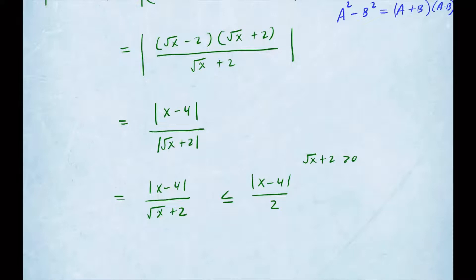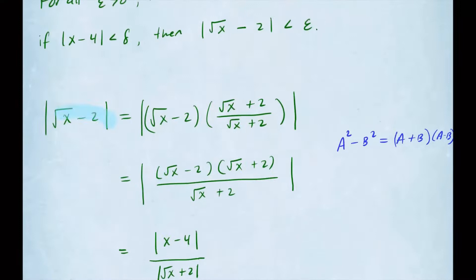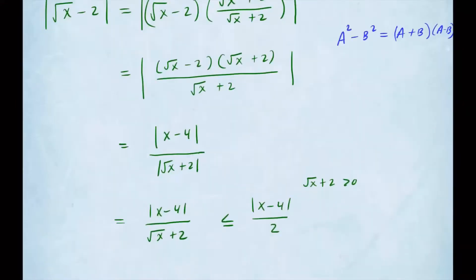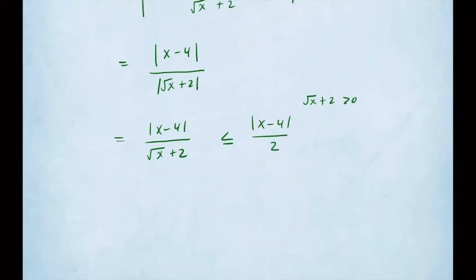Now here we can be a little bit more creative. We know that we want this entire statement to be less than epsilon. So we found our choice of delta. We can say that this is going to be less than epsilon. So we want x minus 4 to be less than epsilon times 2. And this is our choice for delta.